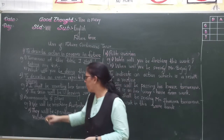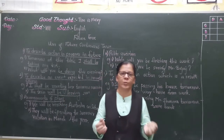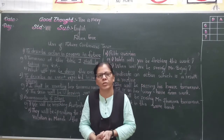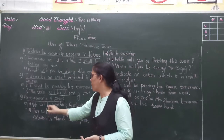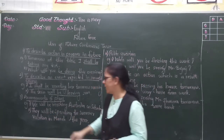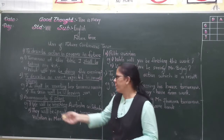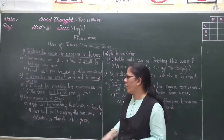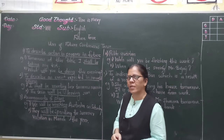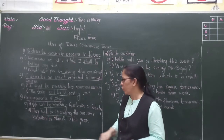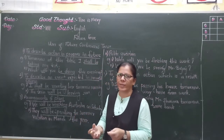The third use is for arrangements and plans. If we have made some arrangements or plans to do in future, we use future continuous tense. For example: 'We will be reaching Australia on Saturday' — this is a future plan. Second example: 'They will be spending the summer vacation in Manali this year.' That action will be going on in future as part of a plan or arrangement.